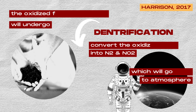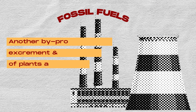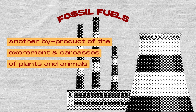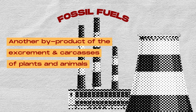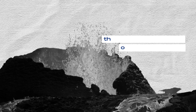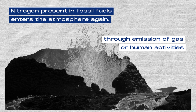The oxidized form of nitrogen within the soil will then undergo denitrification, which will convert the oxidized form of nitrogen into dinitrogen and nitrous oxide gas, which will then go back to the atmosphere. Another byproduct of the excrement and carcasses of plants and animals is fossil fuels. Dead plants and animals are converted into fossil fuels through natural processes taking place over many years. Nitrogen present in fossil fuels enters the atmosphere again through the emission of gas from volcanic eruptions or through industrial combustion and gasoline engines.